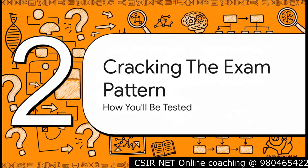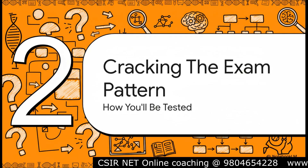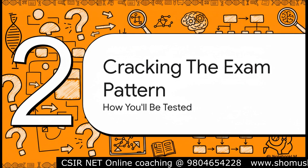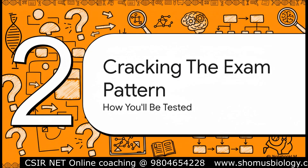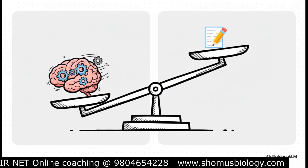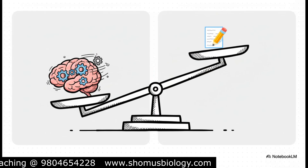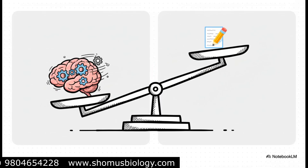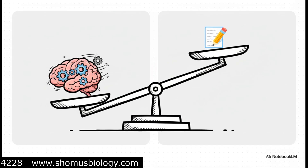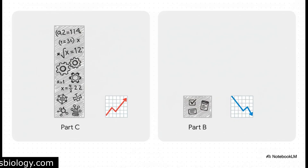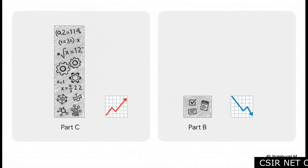So we know what to focus on. The next piece of the puzzle is figuring out how they're going to test you on it. Knowing the topics is one thing, but knowing the kind of questions they'll throw at you is a whole other ballgame. This is absolutely crucial: Unit 1 is not a test of your memory — it's a test of your analytical skills. The questions are designed to make you think, apply concepts, solve problems, and connect ideas. The toughest analytical questions almost always pop up in Part C of the exam, which carries a much higher weightage. Deep conceptual understanding of Unit 1 is absolutely key to getting a high score.